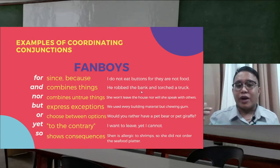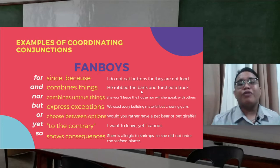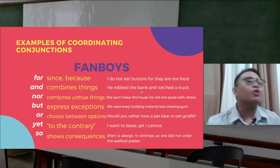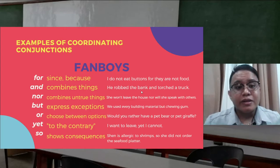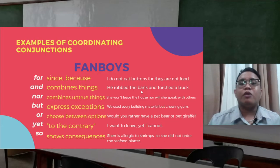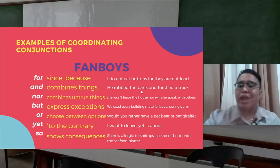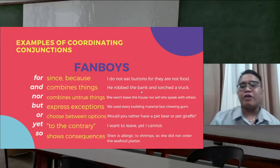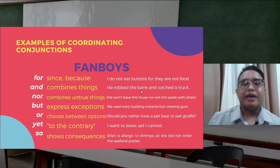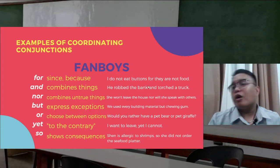For 'nor' — we combine two negative things: 'She won't leave the house nor will she speak with others.' For 'but' — it expresses exceptions: 'We used every building material but chewing gum,' meaning chewing gum was not included. For 'or' — you choose between options: 'Would you rather have a pet bear or a pet giraffe?' For 'yet' — it means to the contrary: 'I want to leave yet I cannot.'